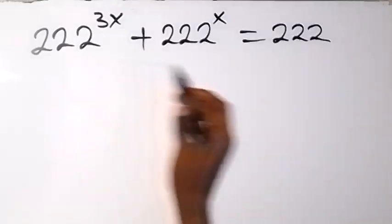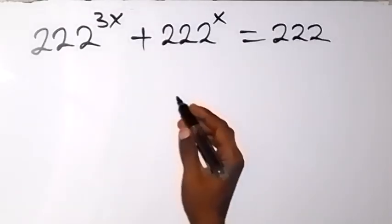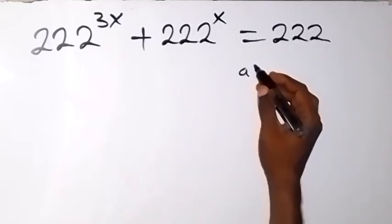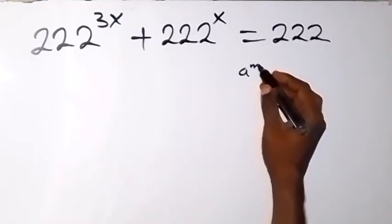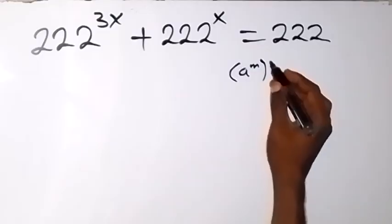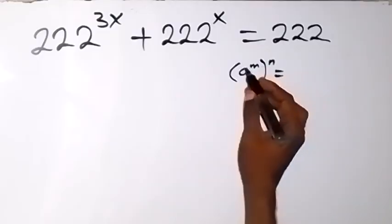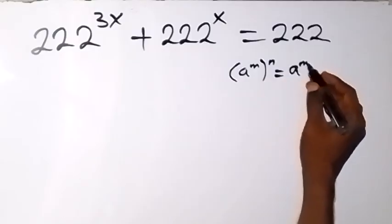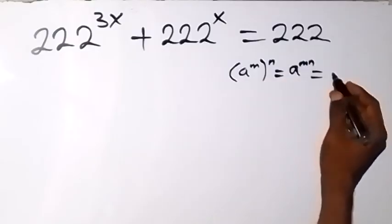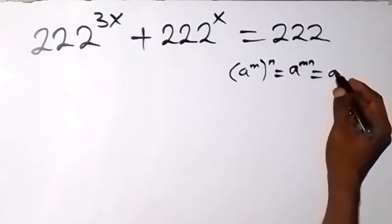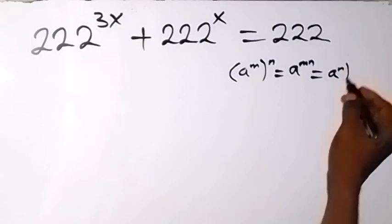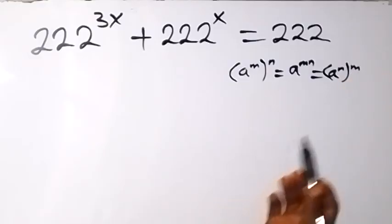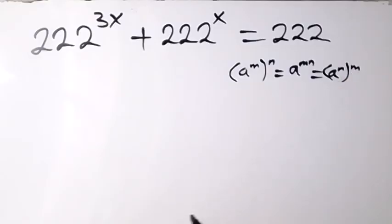From here, we can rewrite this applying the law of indices. When we have a raised to power m, times a raised to power n, we can write this as a raised to power m·n. We can also write it as a raised to power n, then raised to power m — that is, we can interchange the powers.